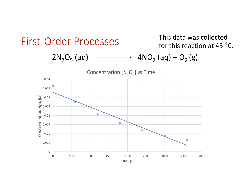Let's look at a first-order reaction: the decomposition of dinitrogen pentoxide into nitrogen dioxide and oxygen. Here's a plot made in Excel of concentration versus time. Pay very close attention to the y-axis. I did a linear fit just to show that this data is not linear — it's hard to come in and make that triangle and calculate the slope, the rate constant, or the concentration, because this is not a linear relationship when plotting concentration versus time.